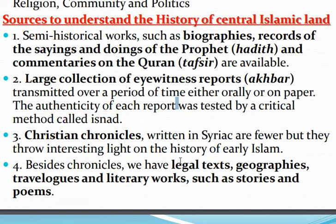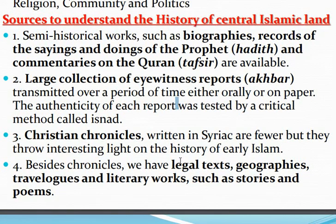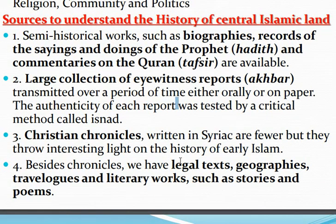Point number three: Christian chronicles. During the time of the Roman Empire, only the Christian religion was spread throughout the world. Chronicles means how the timeline is going on — different events we have seen. So during that time Christian religion was spread, and written in Syriac — ye Syriac language mein likha hua tha — are fewer but they throw interesting light on the history of early Islam.